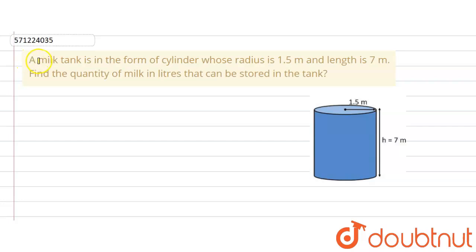The given question says that a milk tank is in the form of a cylinder whose radius is 1.5 meter and length is 7 meter. Find the quantity of milk in liters that can be stored in the tank.